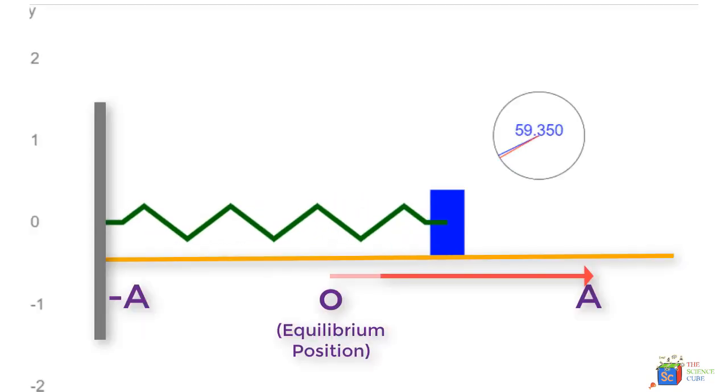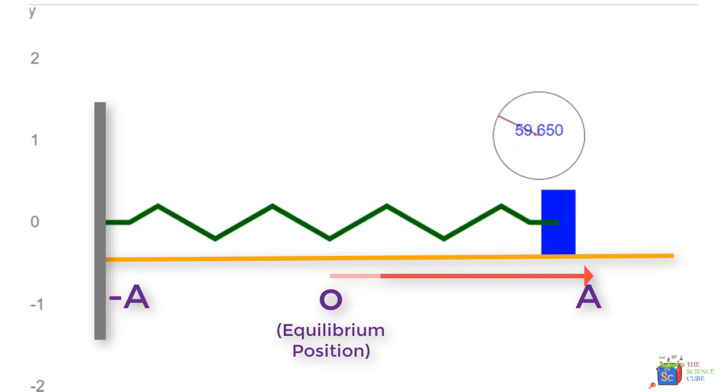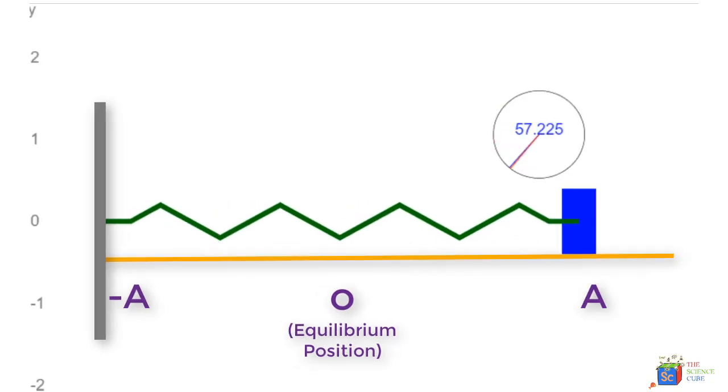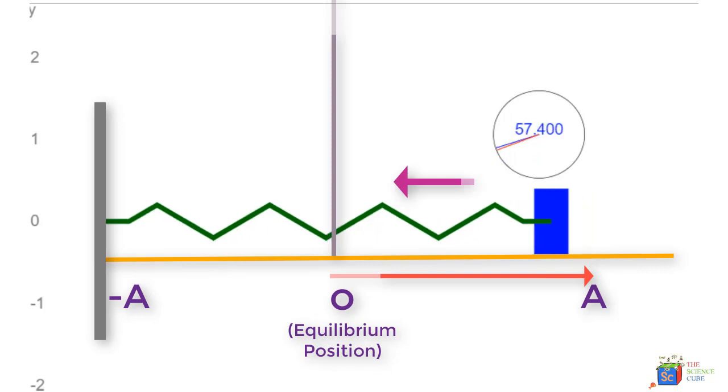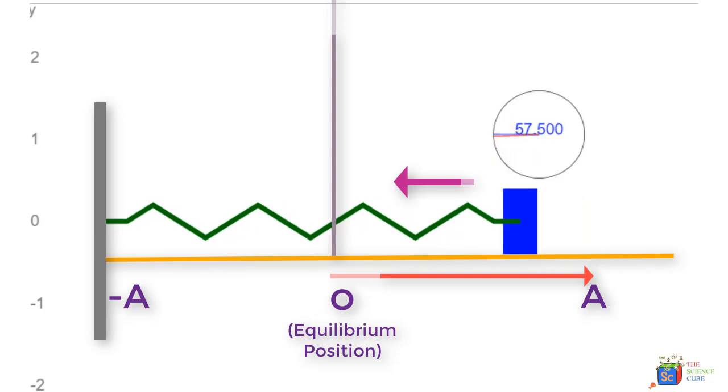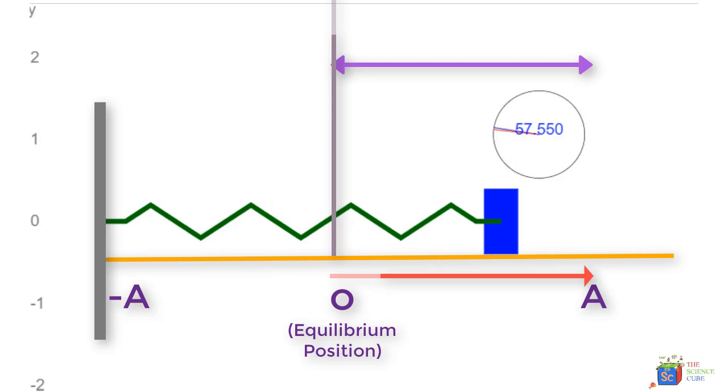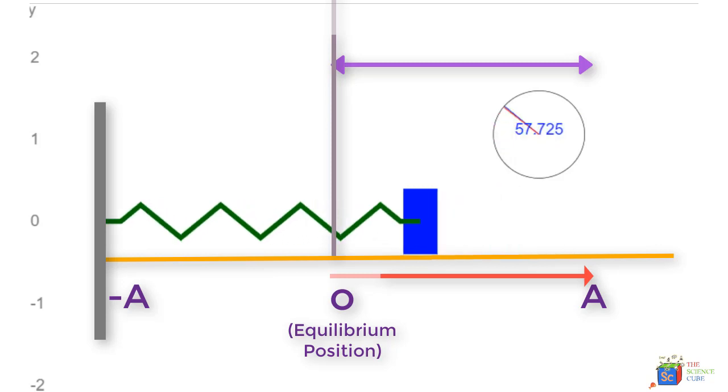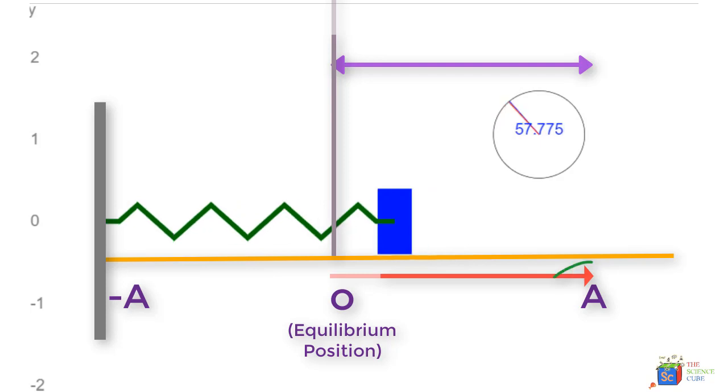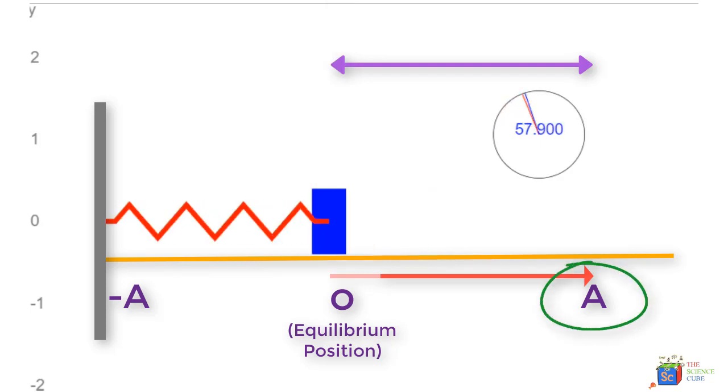Consider the same spring-mass system. Let's say it moves a distance A meters to the right before it starts moving back towards the equilibrium position. This is the maximum distance the mass moves to the right and is called the amplitude, often denoted by the symbol A, and is always a positive quantity.